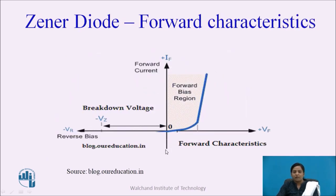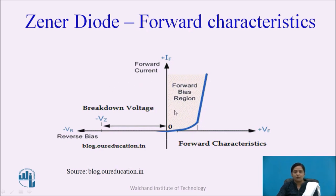These are the forward VI characteristics of Zener diode, with forward voltage on the X axis and forward current on the Y axis. When the forward voltage is very small, the forward current flowing through the device is also small. After one particular voltage — the cut-in voltage — the current flowing through the device increases exponentially. These characteristics are similar to the PN junction diode characteristic.